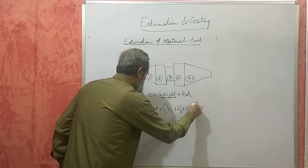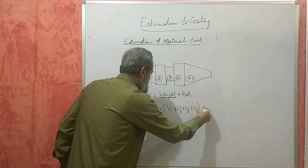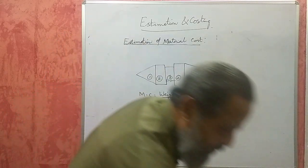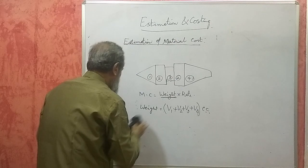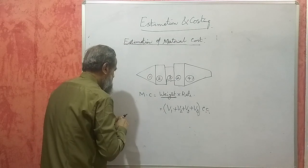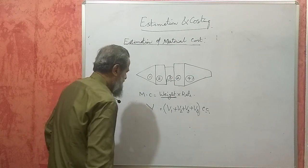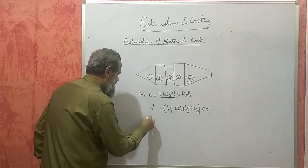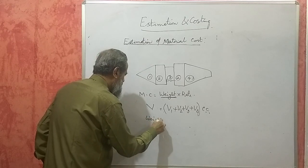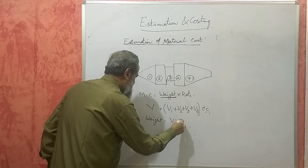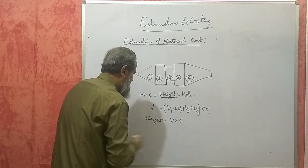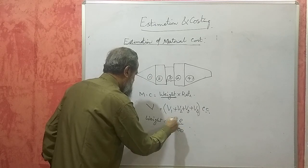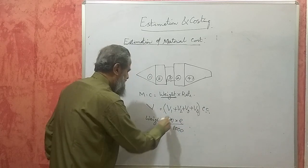These volumes we have to find in cubic centimeters, and the total will give you the total volume V. Then, weight will be equal to volume into density. The density of the material will be given — divided by 1000. Volume will be in cc, density in grams per cc, so this product gives you the weight in grams.